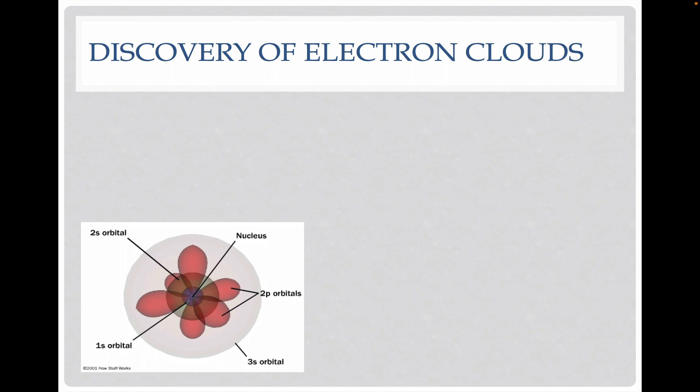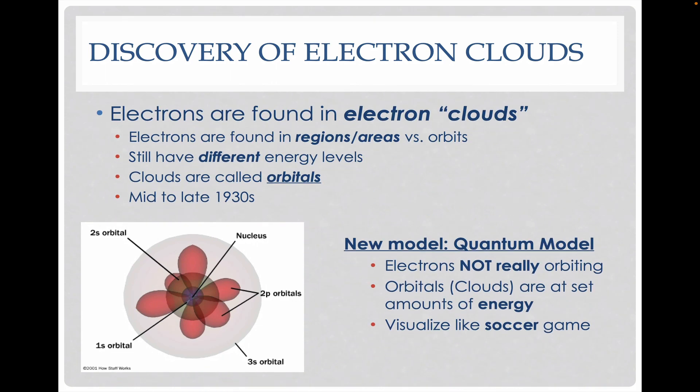The next step to that goes much more mathematical, and we actually believe now that the electrons are not actually in these nice orbits like planets. Instead, we believe that they are in these regions or areas called orbitals. These areas are more like cloud-like regions around the nucleus of the atom. You see these different shapes inside of here. This is in the mid to 1930s.